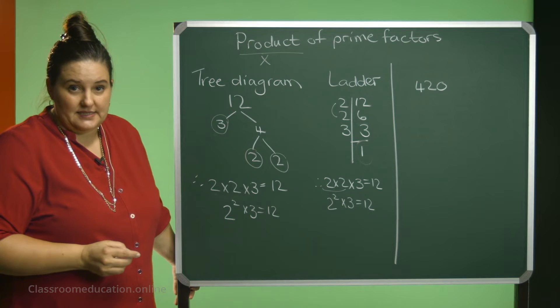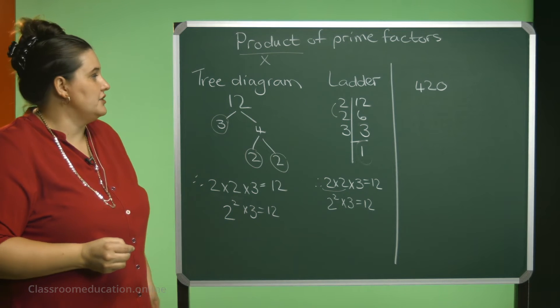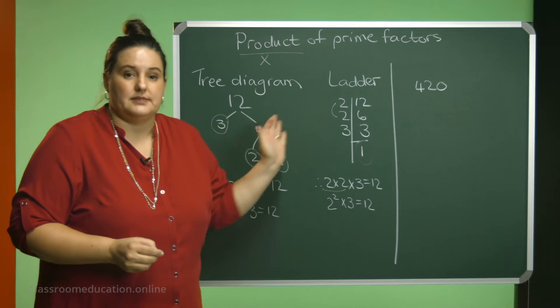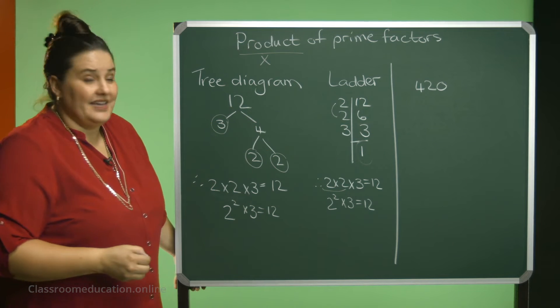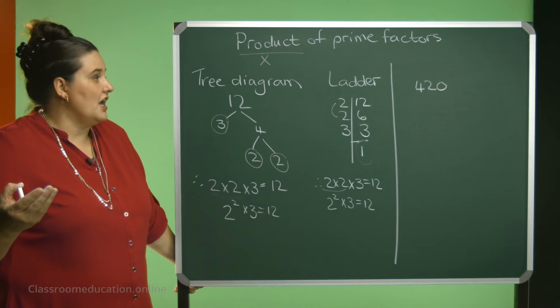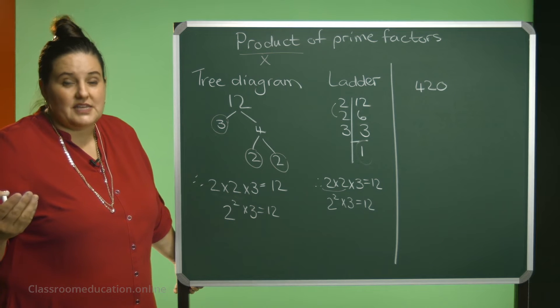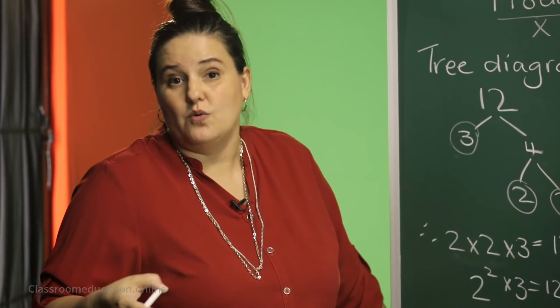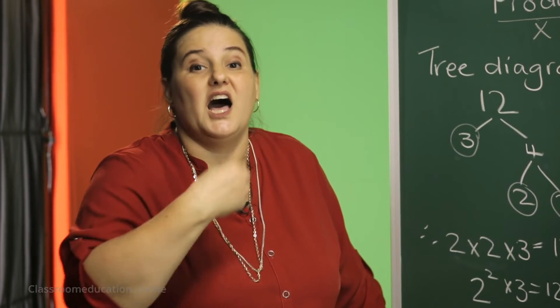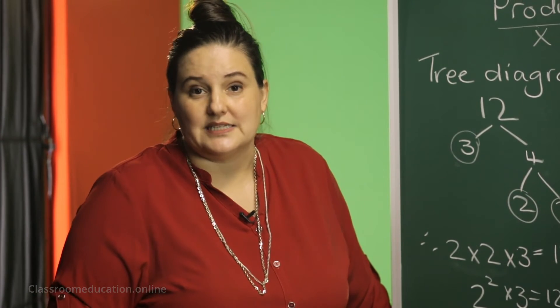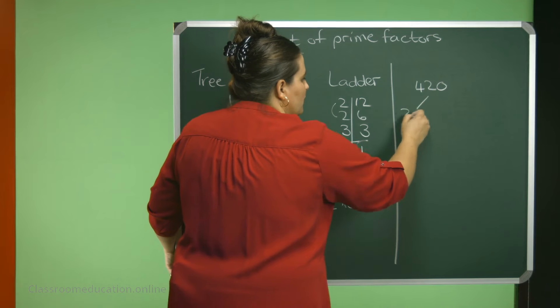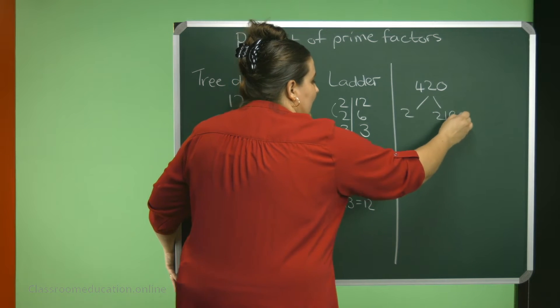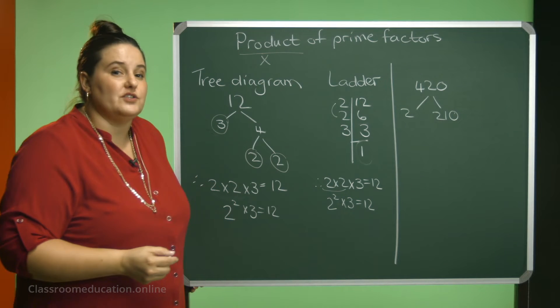So, 420. Again, we are going to do it using both methods. First thing, the tree diagram. It might be easier to start off by the 2. See where the 2 can go into 420. You can also ask what's half of 420? 210. So, 2 times 210 will give me 420.